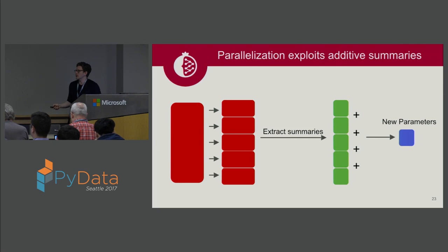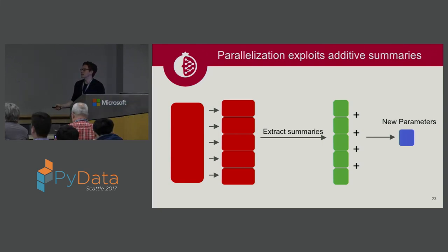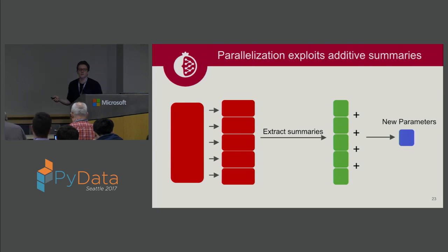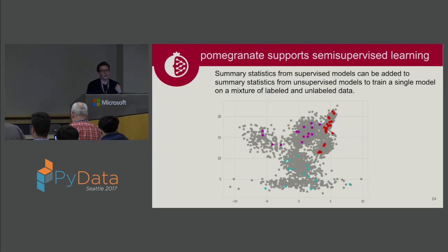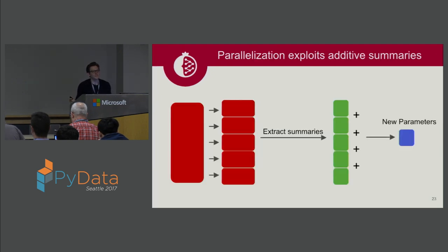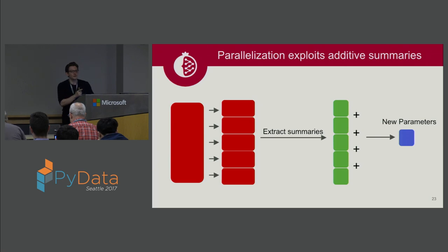Here's a picture of the parallelization concept: take your whole dataset, split it into chunks, use one core each to compute the summaries on those chunks, add the sufficient statistics together, and then compute your parameters from those combined statistics. Question: is Pomegranate doing the threading on its own? I don't know the answer to that question.